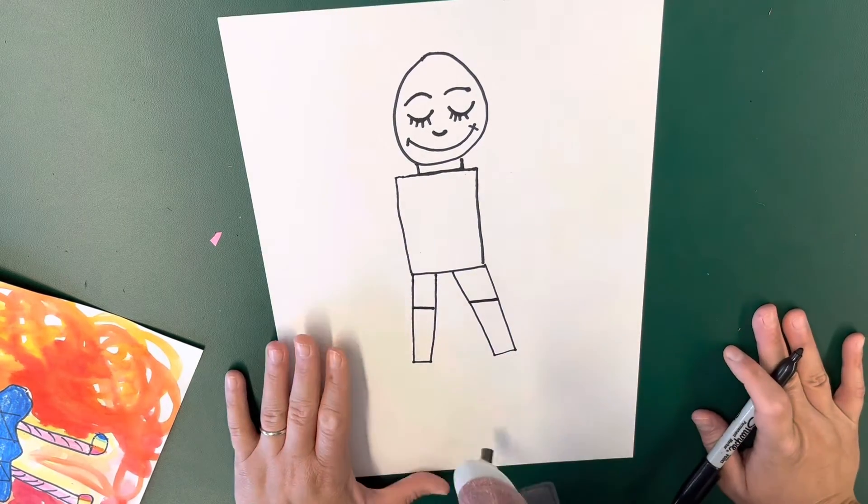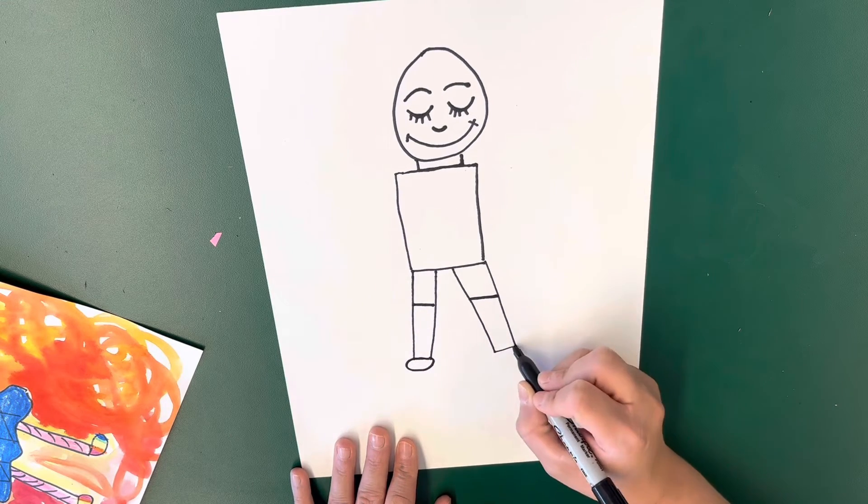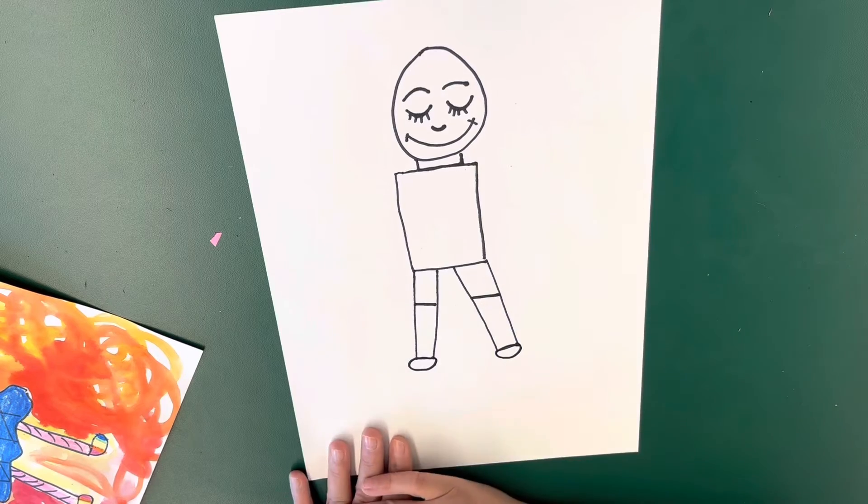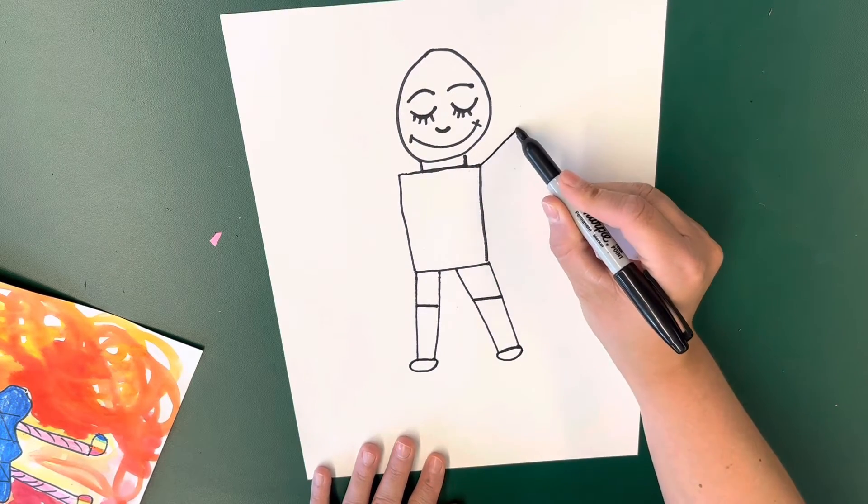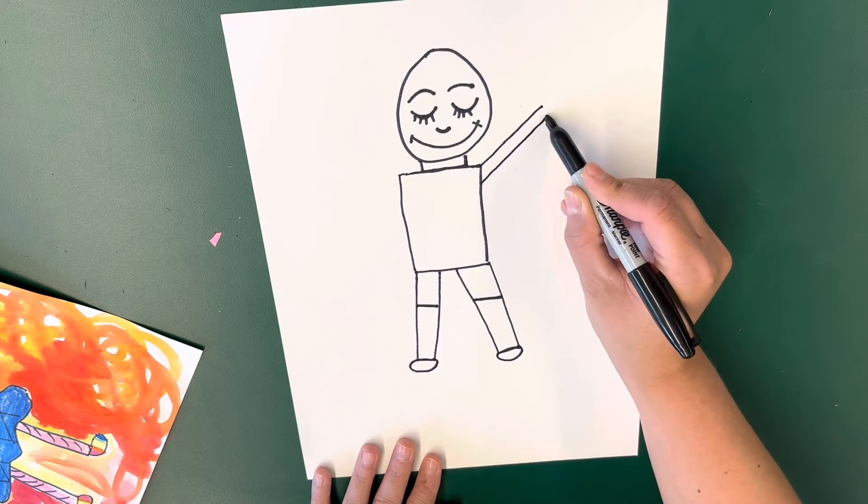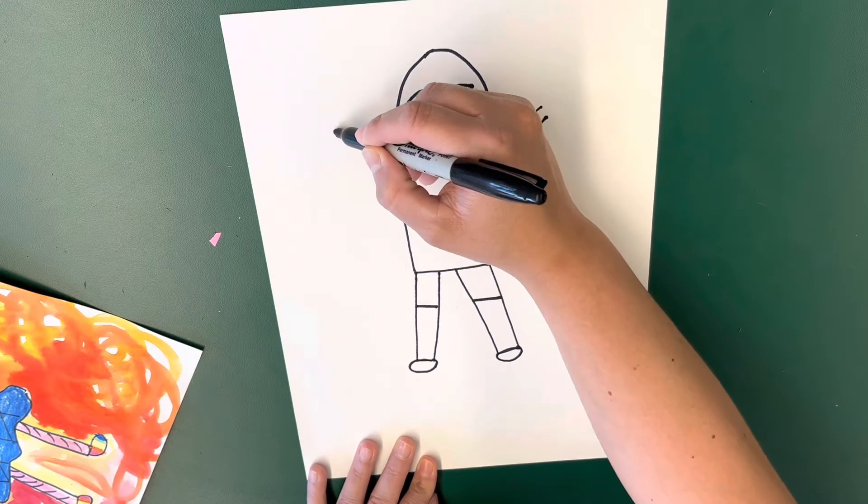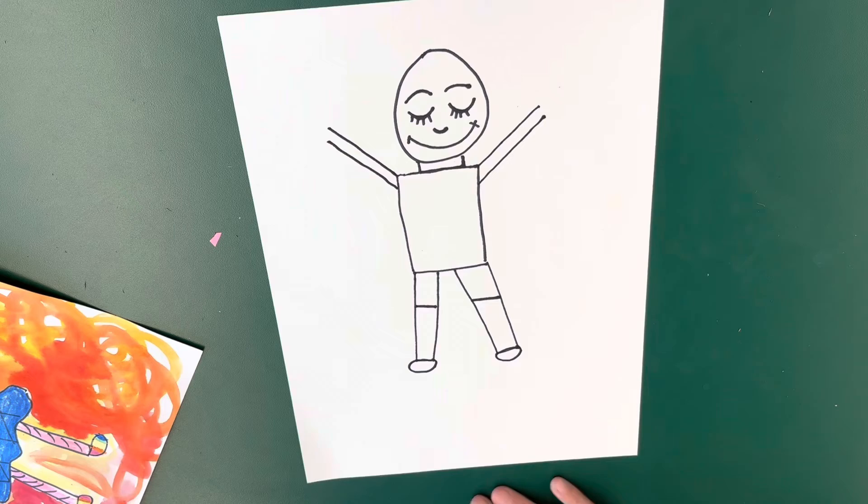For our feet we're going to do ovals that go this way on each side. And then for our arms you're going to find the corner of your rectangle, your jaw line, and another line under it that's the same length. You're going to do the same thing on this corner, another line, and try to keep your arms about the same length.